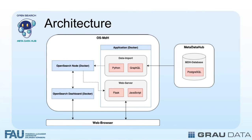The second container hosts an OpenSearch dashboard, providing a user-friendly interface for managing and building visualizations of the data in the OpenSearch node. Finally, our application resides in the third container and consists of two essential components: data import and web server. The data import component automatically imports data from the Metadata Hub into the OpenSearch node, using the OpenSearch Python library and a GraphQL query.